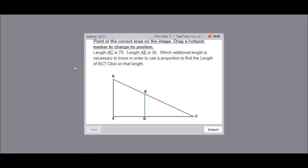All right, Jessica, as promised, I was going to get back to you on this last question in the ratio and proportions test. So here it says length AC is 75. Length AE is 30. Which additional length is necessary in order to use a proportion to find the length of BC? Click on that length.